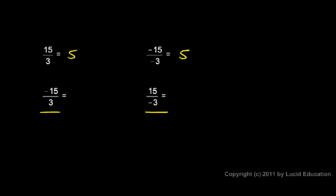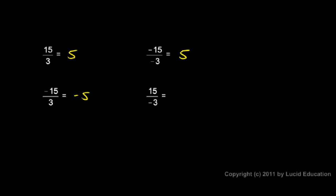In these two cases at the bottom, one number is negative and the other is positive. It doesn't matter which one — here the top one is negative, and in the other case the top one is positive and the bottom one is negative. But in both cases we have a negative and a positive together, and the result is negative five for both.